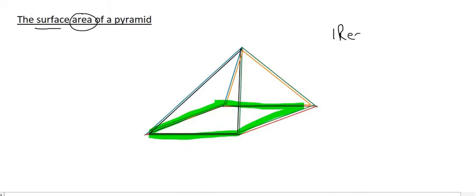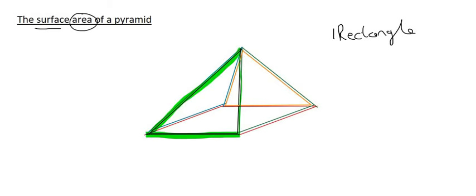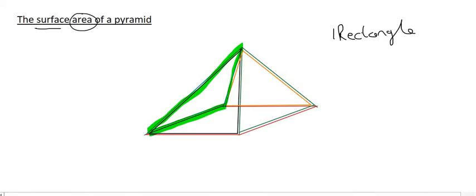So we've already got one rectangle. And then if we had to look at this shape here, well, that's going to be a triangle. So there we would have another triangle, and there's the third one. And then lastly, we have another triangle over here. And so all in all, we are going to have four triangles.